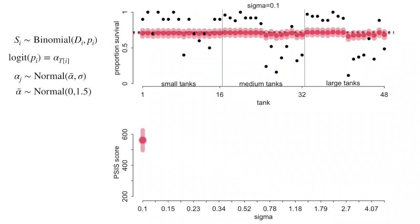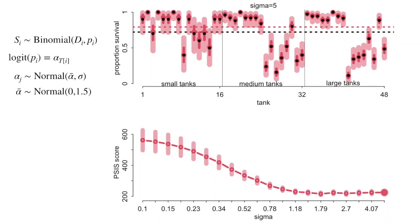Varying effects models are like glassblowing: they produce beautiful things and wonderful results. They're really essential scientific instruments, but you have to use them in a way that requires some practice — and safe practice. This lecture will focus on that, but let me begin by reminding you what varying effects are.